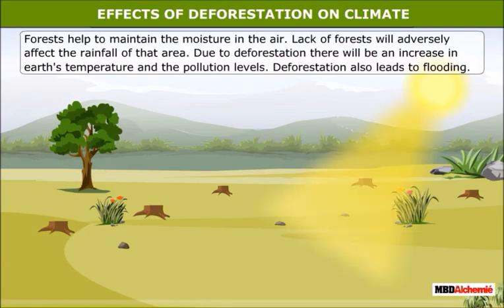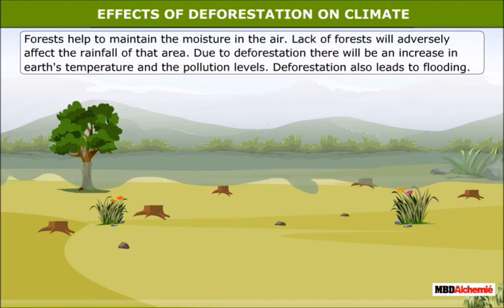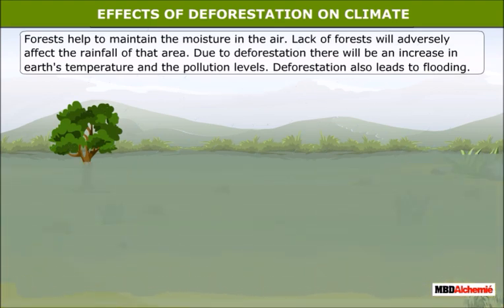Effects of deforestation on climate: Forests help to maintain the moisture in the air. Due to deforestation, there will be an increase in earth's temperature. Rainwater gets easily soaked in forests as the soil there is porous. Deforestation also leads to flooding — the water builds up faster in deforested land than it can be soaked up or drained away.